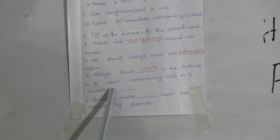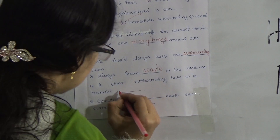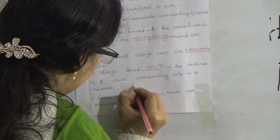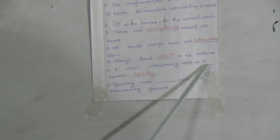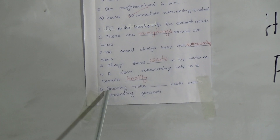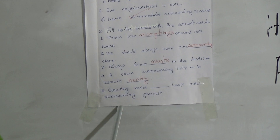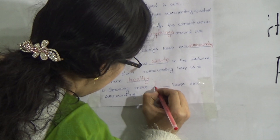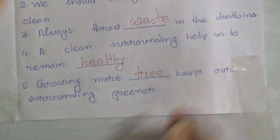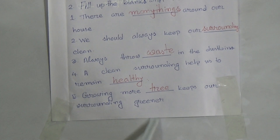Number four — 'A clean surrounding helps us to remain dash.' The answer is 'healthy' — H-E-A-L-T-H-Y. A clean surrounding helps us to remain healthy. Number five — 'Growing more dash keeps our surrounding greener.' The answer is 'trees' — T-R-E-E-S. Growing more trees keeps our surrounding greener.